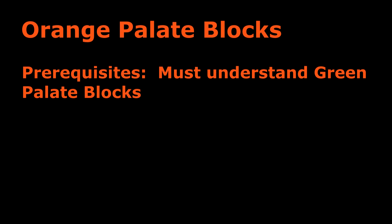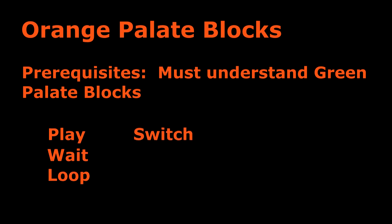There are five different blocks in the orange palette: the start block, the wait block, the loop block, the switch block, and the loop interrupt block.